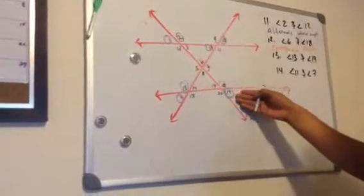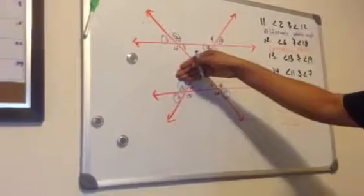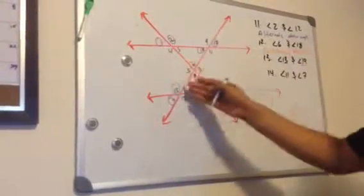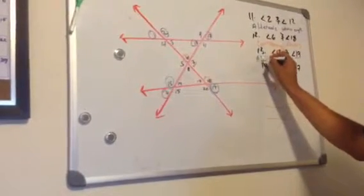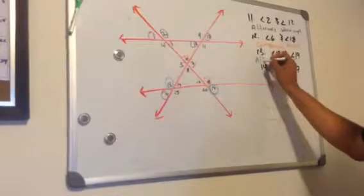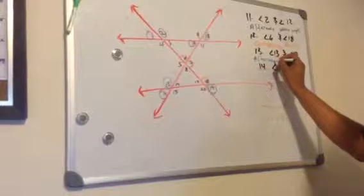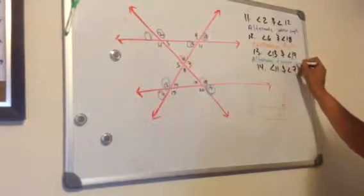So as you can tell, this is going to be out, and this is going to be in the parallel lines, but it's going to be on the outside. So this is going to be called alternative exterior angles.